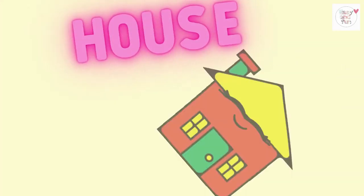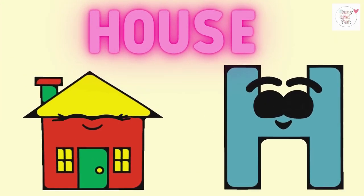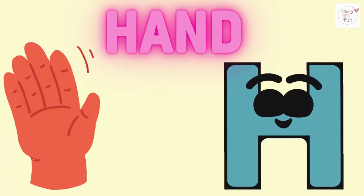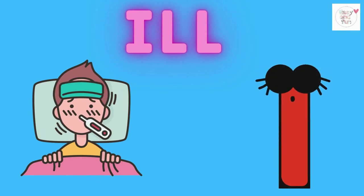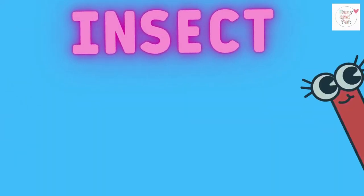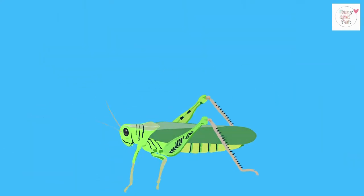H is for house, h-h-house. H is for hand, h-h-hand. I is for eel, i-i-ele. I is for insect, i-i-insect.